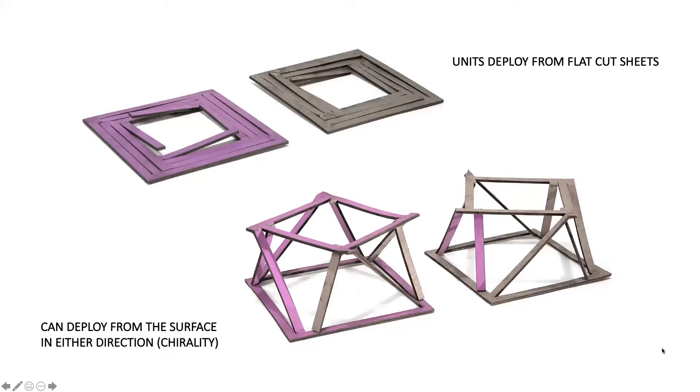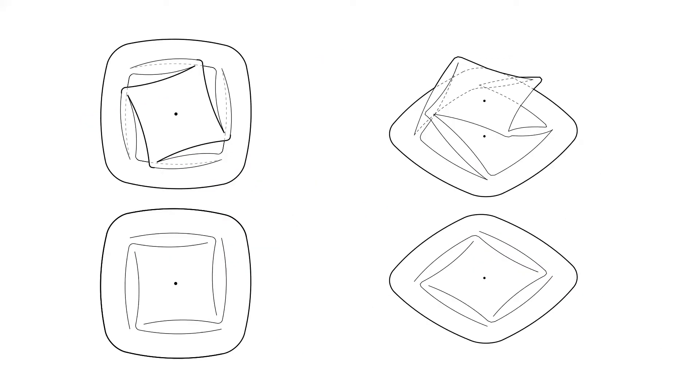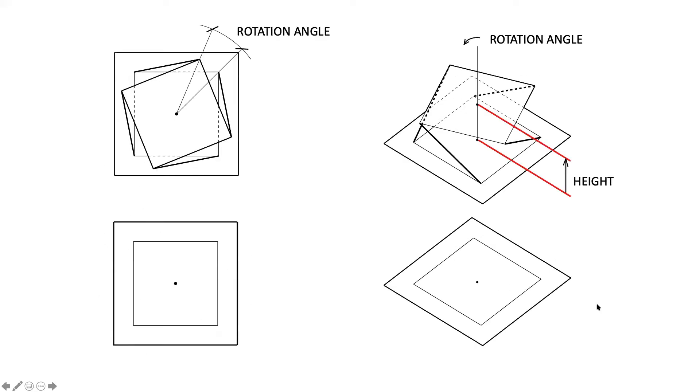Individual units can deploy from a flat cut sheet and they have a chirality to them, as you see in these mockups. Here's a diagram of the cut pattern as it's generally used in steel. And then this is an abstraction that we started to use in order to draw these systems more easily in the computational space, reducing the central hub to a simple quadrilateral, the legs to lines in the base surface to another quadrilateral shape. And you can see that the rotation of the unit hub, which we call this central area, is correlated to the height of the deployment.